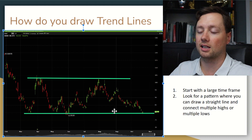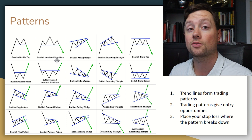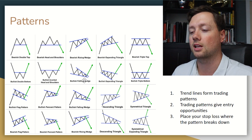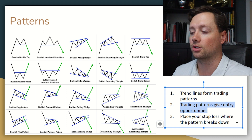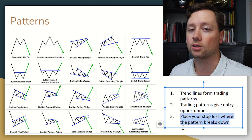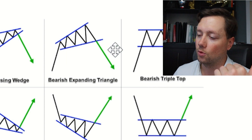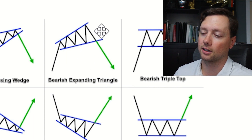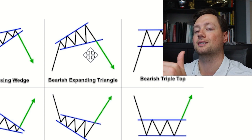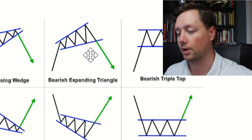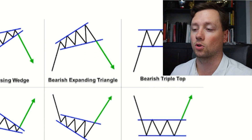Once you've identified how to draw trend lines of support and resistance, putting them together is how you start to identify patterns for trading. Here are several different patterns — they're all formed by identifying areas of support and resistance. You draw your trend lines, figure out what pattern you're in, execute the trade, and place your stop loss where the pattern breaks down. For example, in a bearish expanding triangle with resistance on top and support on the bottom breaking to the downside, I would go short when support breaks down and put my stop loss just above support.